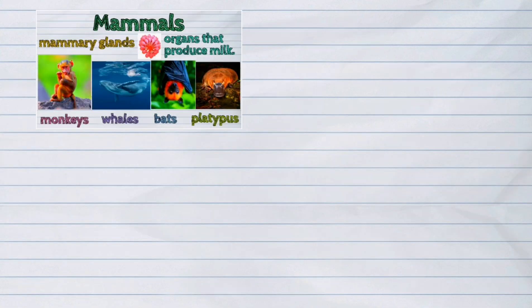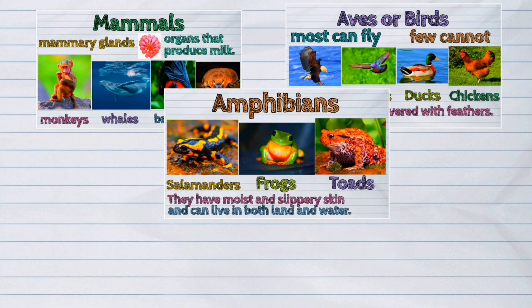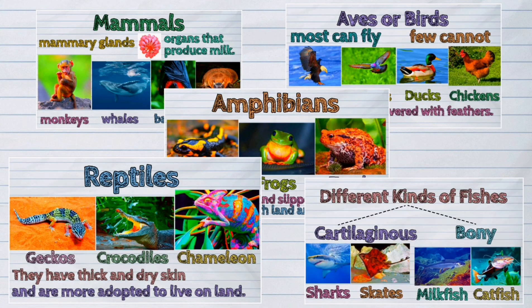Vertebrates are only around 3% of all the animals on Earth, but they tend to be much more intelligent than invertebrates. Although they encompass only a small percentage of the population, vertebrates can be found on all major land masses and in all major oceans and seas on Earth.